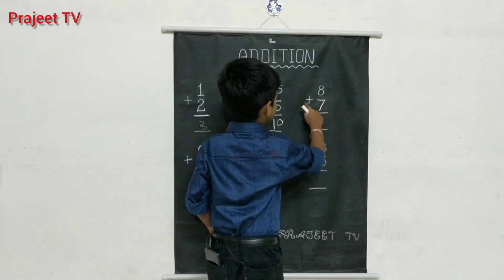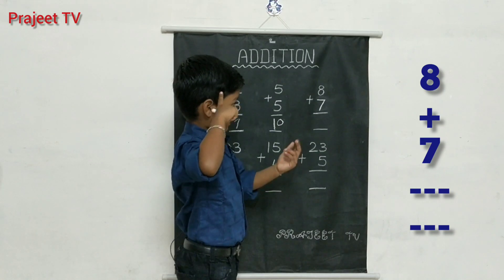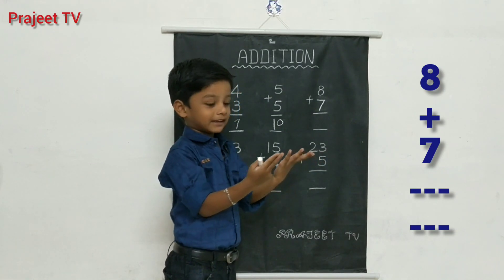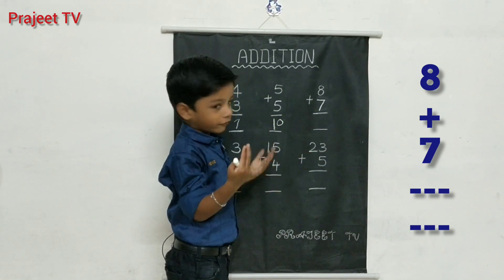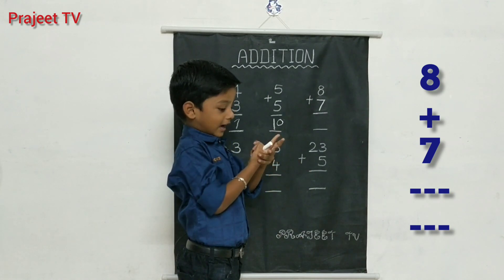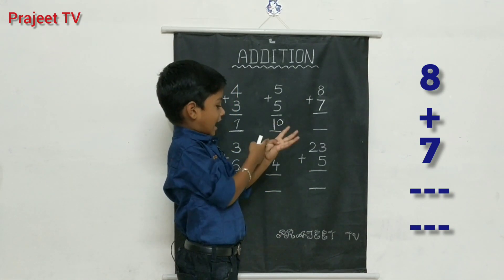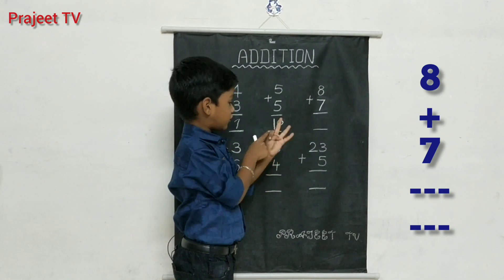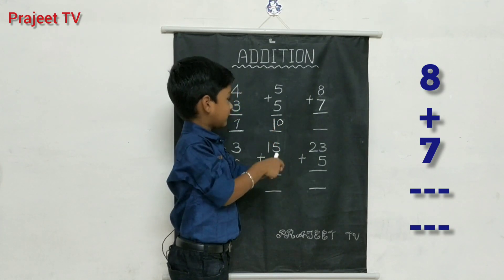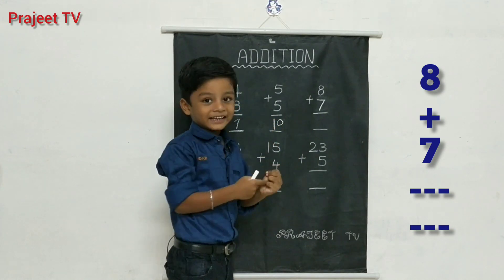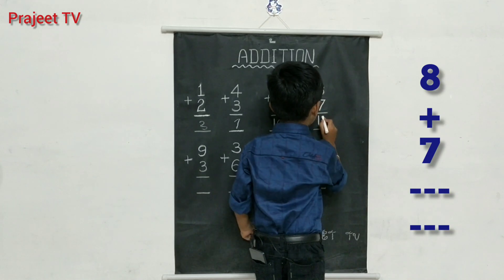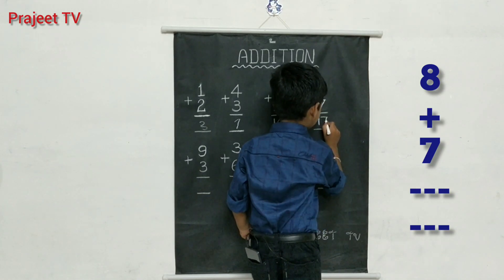Eight plus seven. Eight in the mind, seven in the fingers. Eight after nine, ten, eleven, twelve, thirteen, fourteen, fifteen. Answer: fifteen.